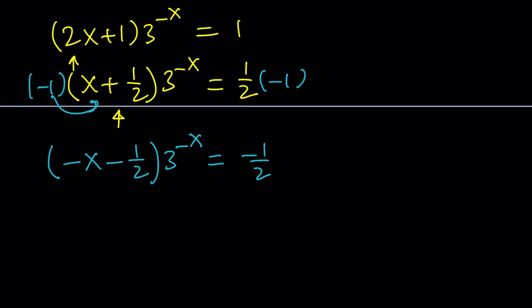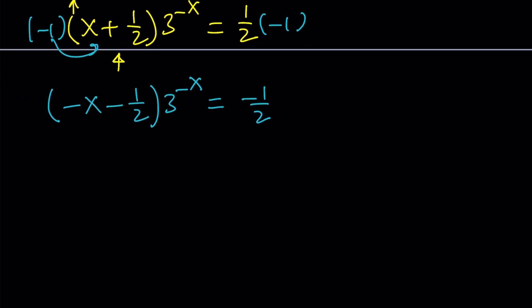So far, so good. Hopefully, you are following. Now, the next thing I want to do is, I got negative x minus 1 half here, and I got negative x here. They need to be the same. You get the idea? I know some of you already figured out what I'm getting at, but don't say it if you know it.